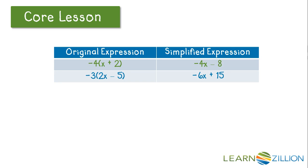Let's take a look and see if we notice any patterns. In our first expression we had negative 4 times the quantity x plus 2 and we simplified it to be negative 4x minus 8. In our second expression we had negative 3 times the quantity 2x minus 5 and we simplified it to be negative 6x plus 15.